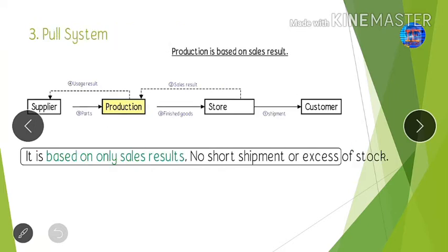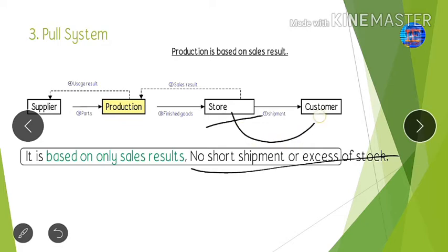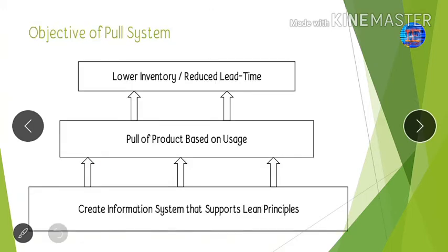In the pull system, there will be no short shipment or excess stock, because we keep a safety stock of every part in a store. When the customer demands, we dispatch parts from the store. If demand is high and safety stock is reduced, we inform production to produce those parts. If demand is low, we inform production not to produce, because sales that month are very low.